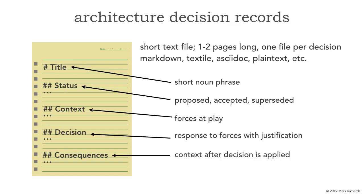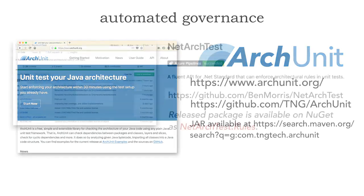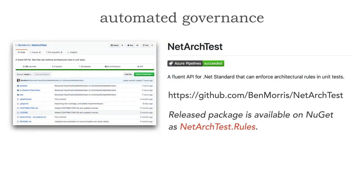I want to show you two open source frameworks that you can use. The first is something called ArcUnit — this is for Java and you can find it at arcunit.org. The second is NetArcTest, and this is for C#. Ben Morris basically took a port from ArcUnit and converted it so that we can have the same kind of automated tests for C# as we do for Java. ArcUnit for Java, NetArcTest for C#.